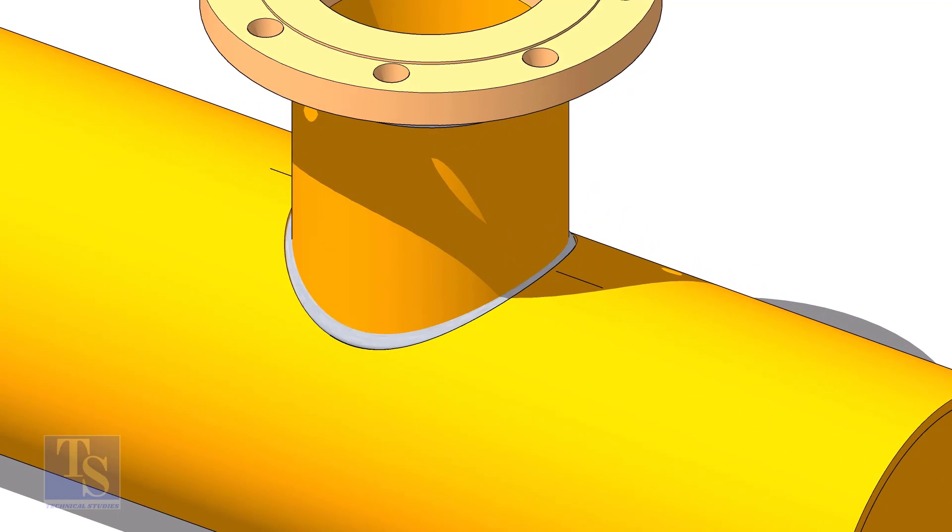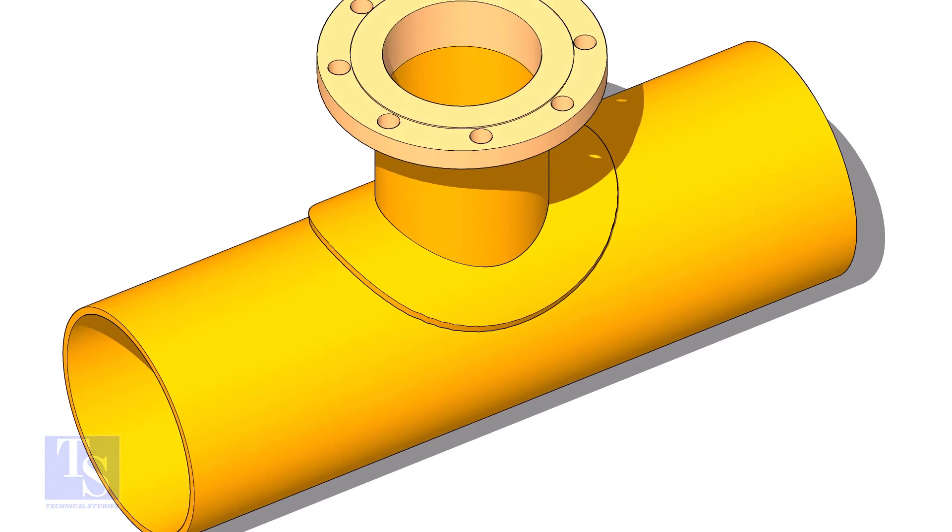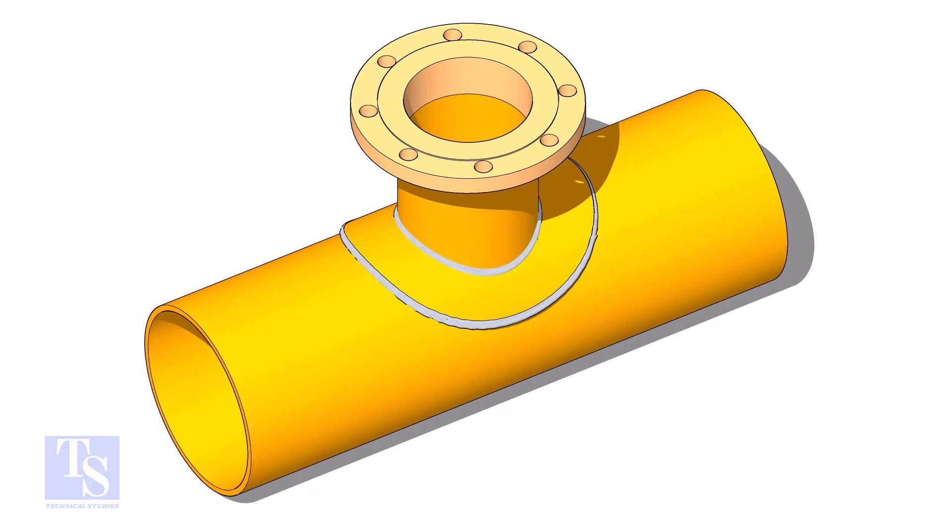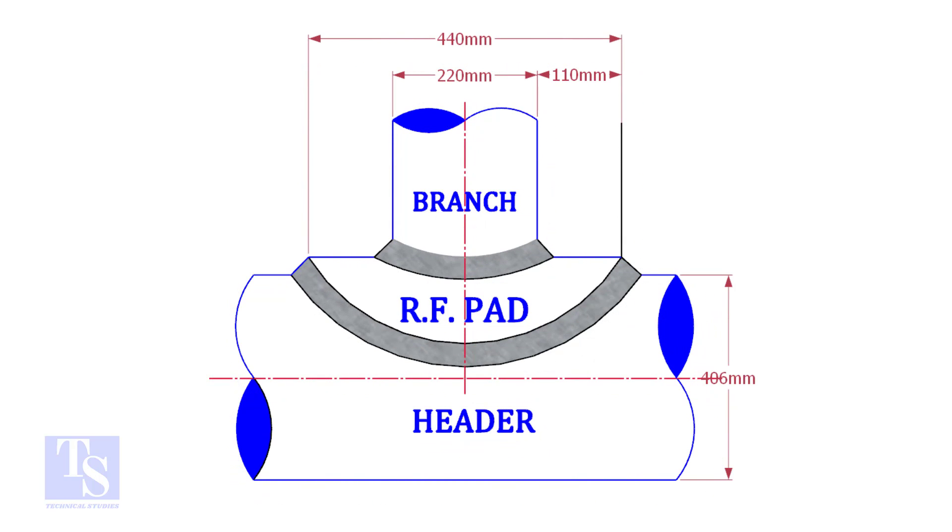A reinforcement pad or RF pad is used to strengthen the fabricated or welded pipe branch connection joints. Usually, the outer diameter of an RF pad is double the OD of the branch pipe. The OD of our branch pipe is 220 mm, so the outer diameter of our RF pad is 440 mm.